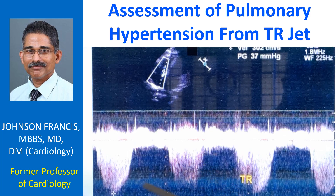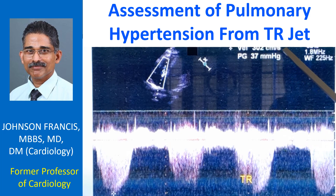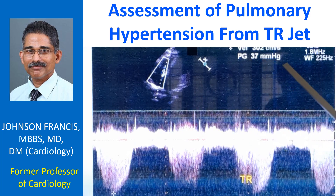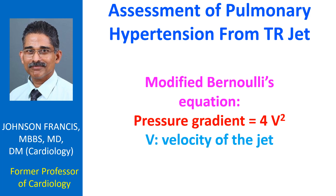You calculate the gradient from the velocity. Peak velocity is calculated here as 302 cm per second and the corresponding gradient has been calculated by the machine as 37 mmHg. Calculation of gradient is based on the modified Bernoulli's equation: pressure gradient equals 4V squared, where V is the velocity.